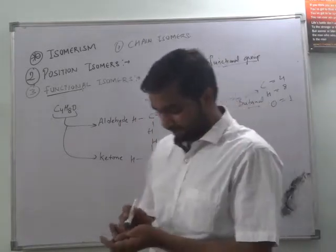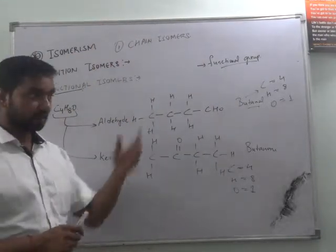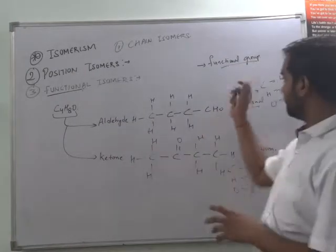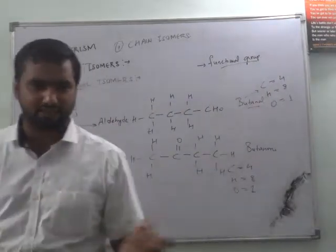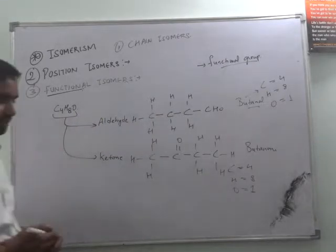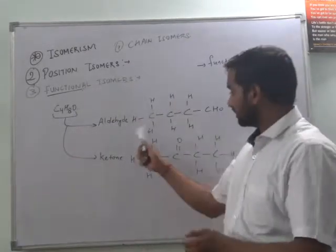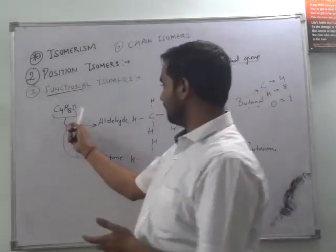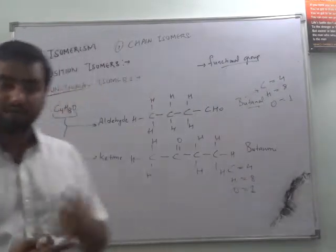We have seen what functional isomers are. We have already studied chain isomers and position isomers. Functional isomers depend on the functional group — alcohol, aldehyde, ketone, carboxylic acid. They share the same molecular formula but have a different functional group. We have seen the example of C4H8O with aldehyde and ketone.